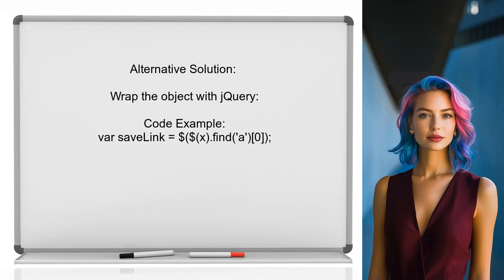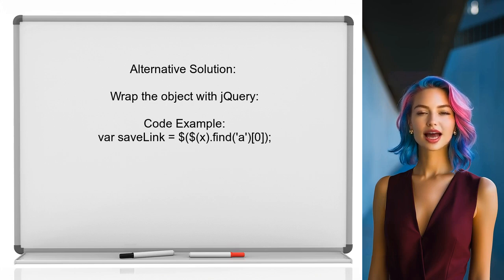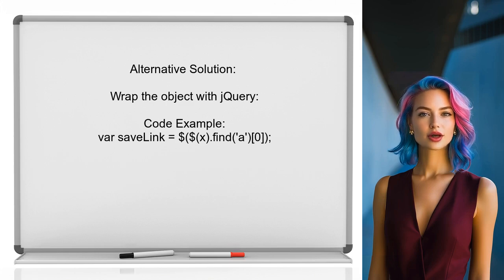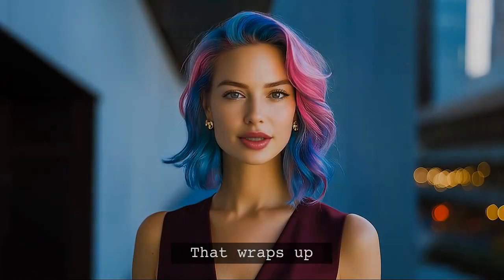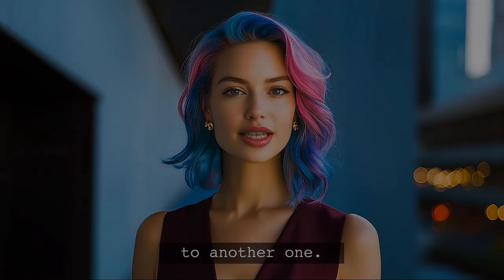They recommend modifying the code to create the save link variable like this: `var saveLink = $($(x).find('a')[0])`. That wraps up that answer — let's move on to another one.